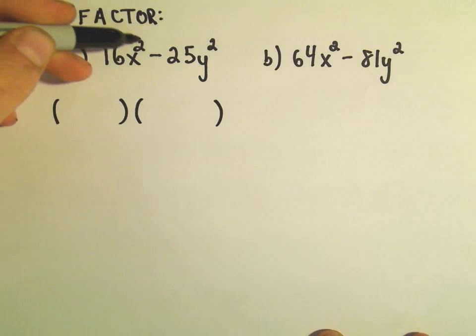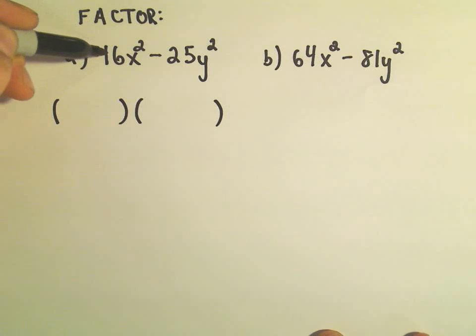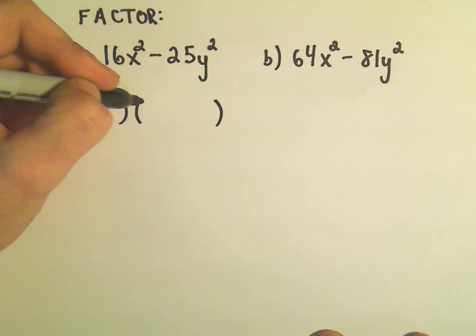I'm basically just taking the square root of the first term, so the square root of 16x squared. What multiplied by itself would be 16x squared? We would just need 4x and 4x.